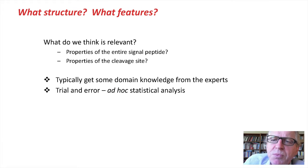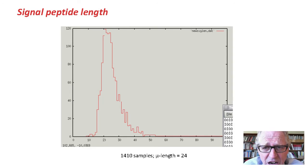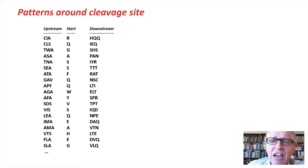So what properties do we think are relevant? Do we want properties of the entire signal peptide, or just properties around the cleavage site? We might get some domain knowledge from a biologist to help us out, or we might do some ad hoc statistical analysis to look for things that might correlate with the cleavage site. For example, given the 1400 examples in our data set, we might find that there's a very tightly clustered length with a mean length of 24. So knowing the position of a residue might be useful in predicting whether or not it's the cleavage site. If we look at the residue at the start of the mature protein, and perhaps the three residues immediately upstream of the cleavage site, and the three residues downstream from it, there might be some useful information there, some context.